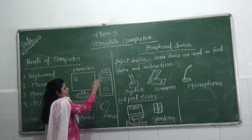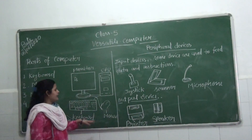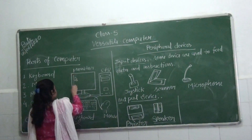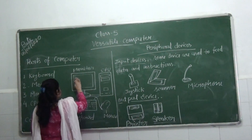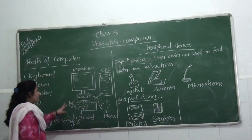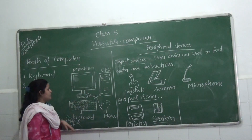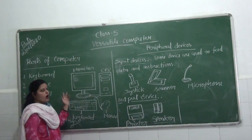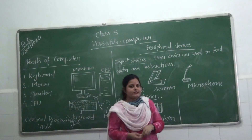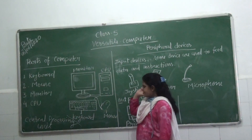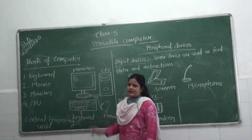The CPU controls all the activities of the computer. This is the monitor. Monitor is like a terminal screen and it is an output device. When the CPU processes the data, the results are shown on the monitor.